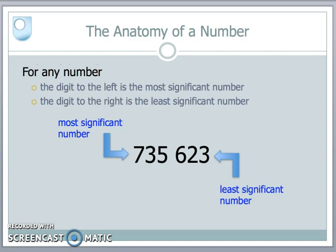When I look at numbers, let's look at what we call the anatomy of a number. Here's a number: 735,623. When I look at this number, the number on the left, the seven, is what we call the most significant number. It means 700,000. Whereas the number on the right, the three, is the least significant number. This is only three units in 700,000. So it's not carrying much information compared with the numbers to its left.